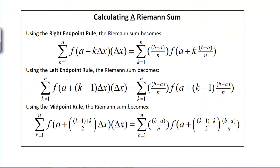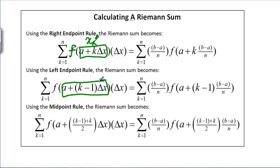In summary, we have formulas for right, left, and midpoint Riemann sums. They're all the same except for the X sub K star value — the point on the X axis plugged into the function to get the height. Otherwise, they all take a point on the X axis for each rectangle, plug it into the function for the height, multiply by the same width delta X for every rectangle, and add them all up. This is the formula for estimating areas under curves using rectangles — Riemann sums.